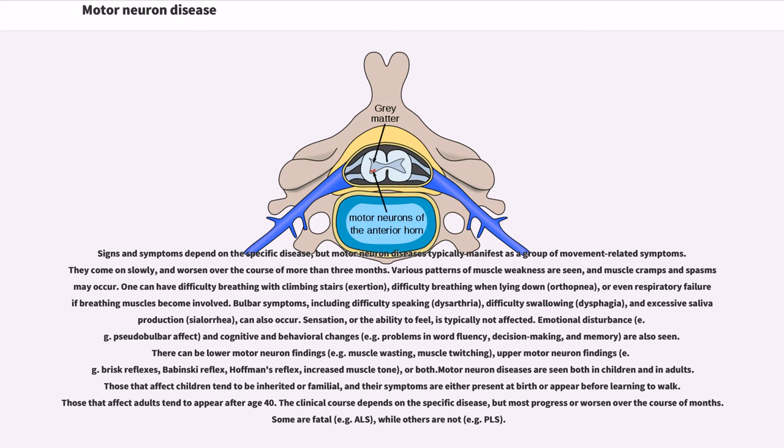Motor neuron diseases are seen both in children and in adults. Those that affect children tend to be inherited or familial, and their symptoms are either present at birth or appear before learning to walk. Those that affect adults tend to appear after age 40.